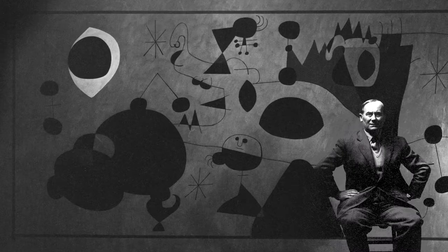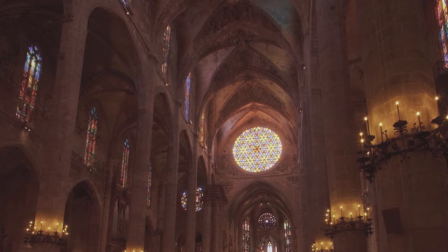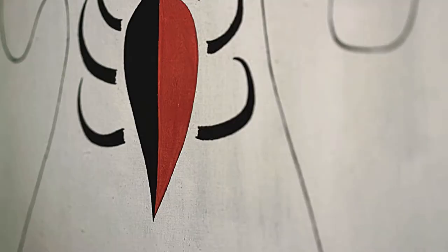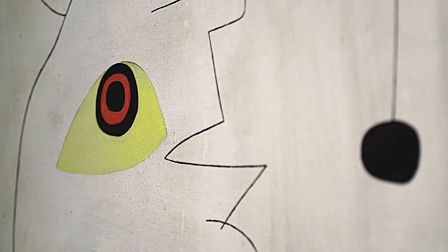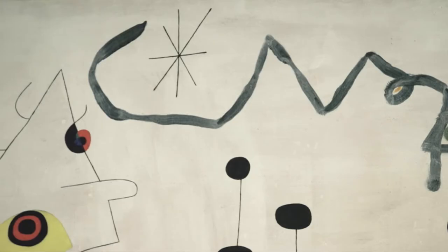Miró said that he wanted an art that was a constant spiritual vibration. Part of the achievement here is how much he is expressing with such graphic restraint. You realize that every element throbs with a special meaning for the vast human message that he is trying to convey about tragedy.